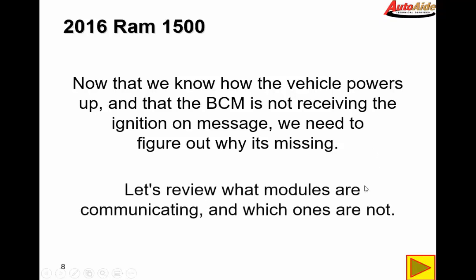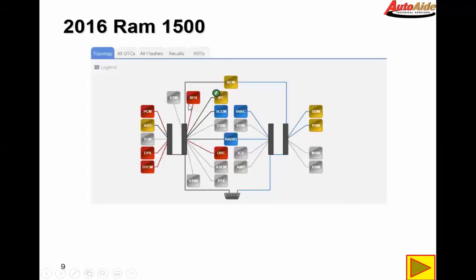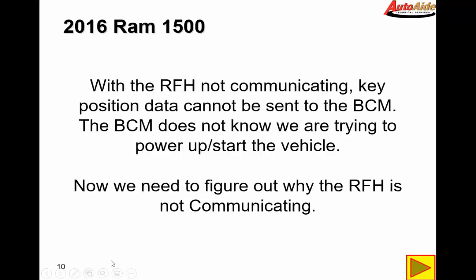Let's review what modules are communicating and which ones are not. Going back to the topology screen — we first start with the ignition node; however, we don't see it on this screen because there are no CAN bus communication wires going to that module. It communicates directly with the next module in the chain, which is the radio frequency hub, and we get information from that module through the RFH. Looking at our screen, we can see that the RFH module is offline. With the radio frequency hub not communicating, the key position data can't be sent to the BCM, so the BCM doesn't know we're trying to power up and start the vehicle.